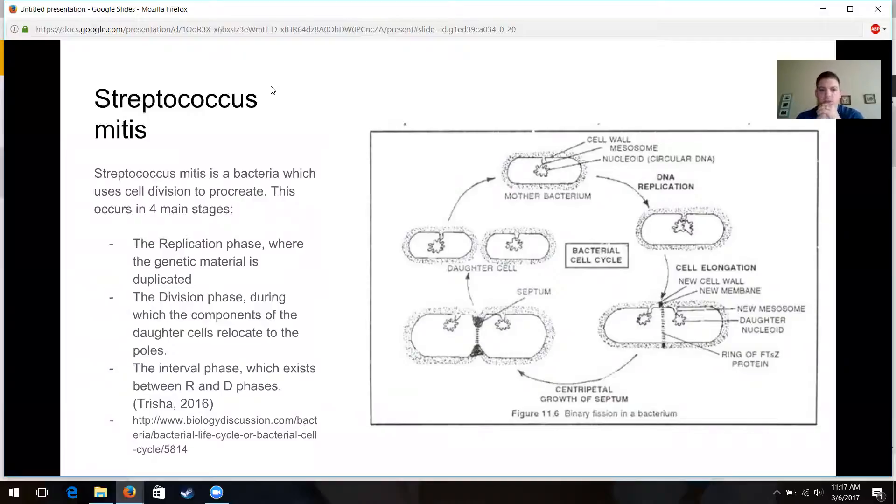The division phase, that's the mechanical phase of reproduction where all of the materials that have now been copied that are required for the two daughter cells to survive, both start moving towards the poles of the original cell as the original cell elongates to host all of that extra material. So as they start moving the material to the poles, you start to see that elongation.